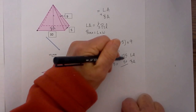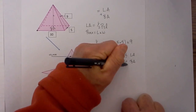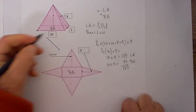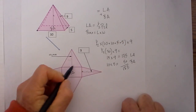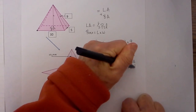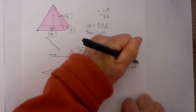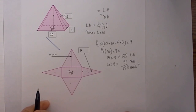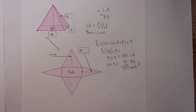So now 135 plus 50 equals 185. No units are given, so I will just call it units squared, because surface area is always square. I hope that helps with the surface area of a rectangular pyramid.